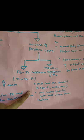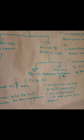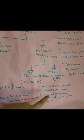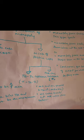Under the MR-MC approach, a monopoly firm attains equilibrium when two conditions are fulfilled: first, marginal revenue must equal marginal cost, so MR equals MC; and second, the MC curve should cut the MR curve from below.